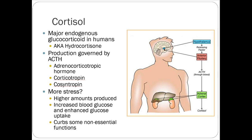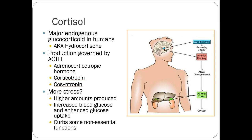Cortisol is the major endogenous glucocorticoid in humans, also known pharmaceutically as hydrocortisone — same exact structure, one made by drug companies, one by your body. Production is governed by adrenocorticotropic hormone (ACTH). More stress means higher amounts produced, leading to increased blood glucose, enhanced glucose uptake, and curtailing of non-essential functions. A really common side effect is that diabetic patients on glucocorticoids can have their blood sugar go completely out of whack — or even normally glycemic patients suddenly end up on insulin.